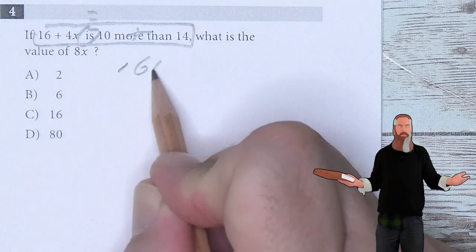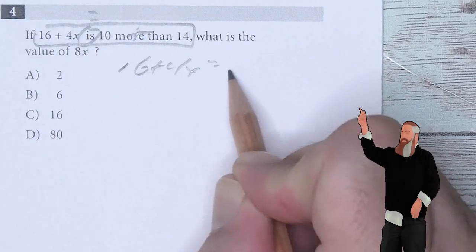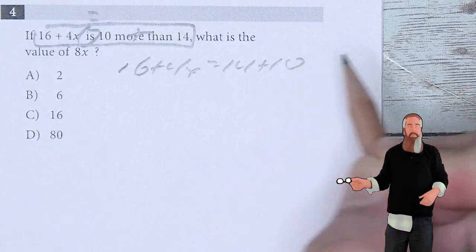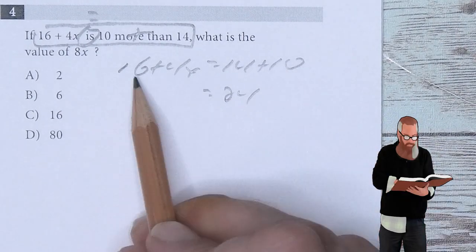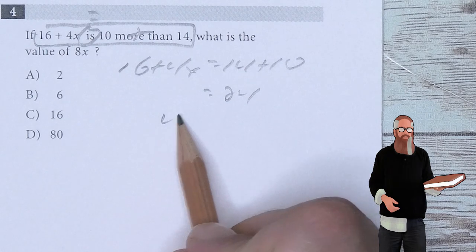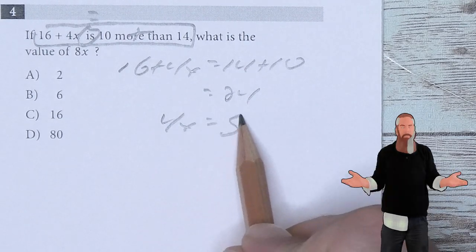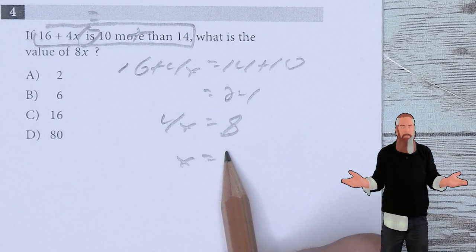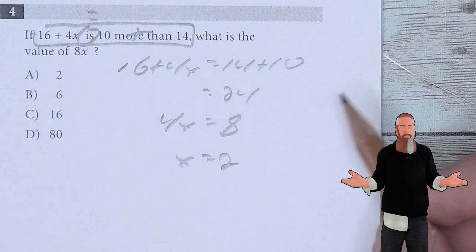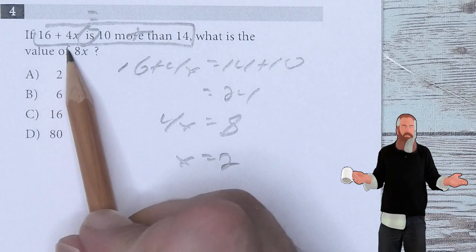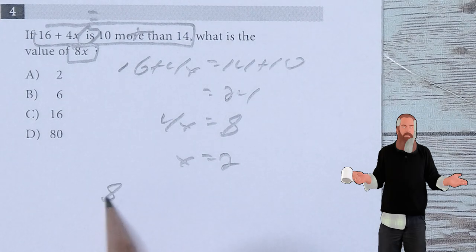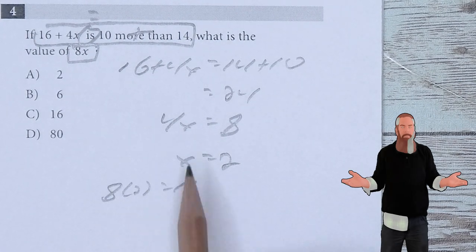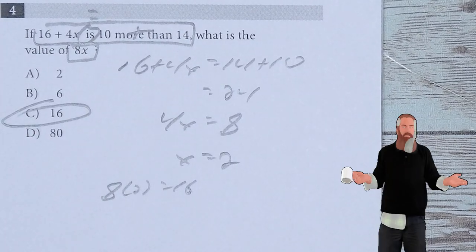This gives me 16 plus 4x is equal to 14 plus 10. 14 plus 10 is 24. So I subtract 16 from both sides, giving me 4x is equal to 8 or x is equal to 2. Now it wants to know what is 8 times x, giving us an additional step. So 8 times 2 is 16 and C is the answer.